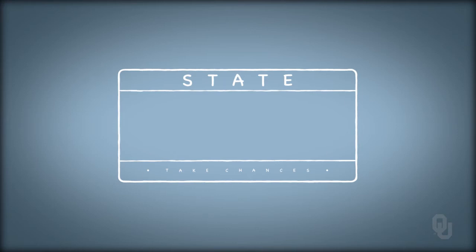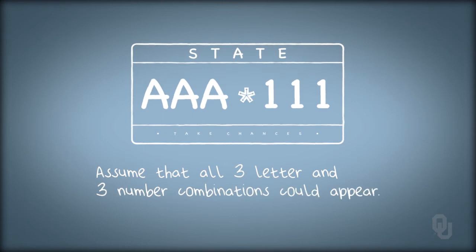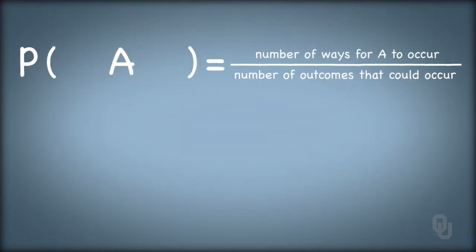For another example of classical probability, let's consider a state license plate number that is randomly assigned with six digits: letter, letter, letter, and then number, number, number. Assume that all possible three-letter combinations or three-number combinations could appear on the license plate, though there are probably some inappropriate words or number combos that probably wouldn't make it onto a plate, but let's not worry about that.